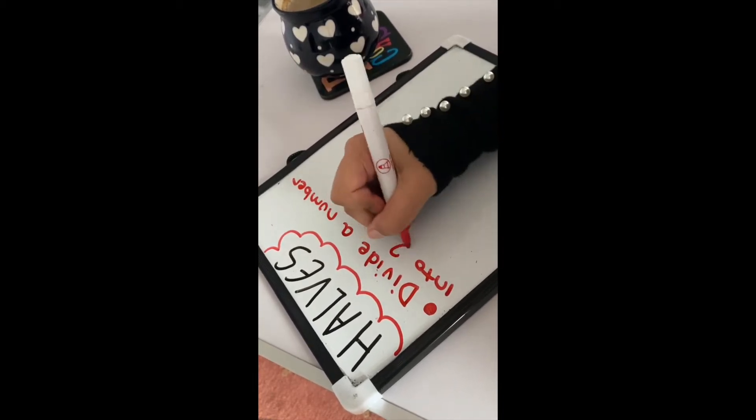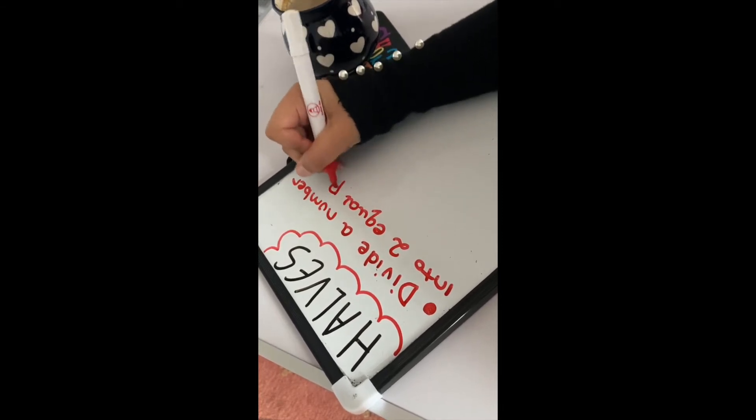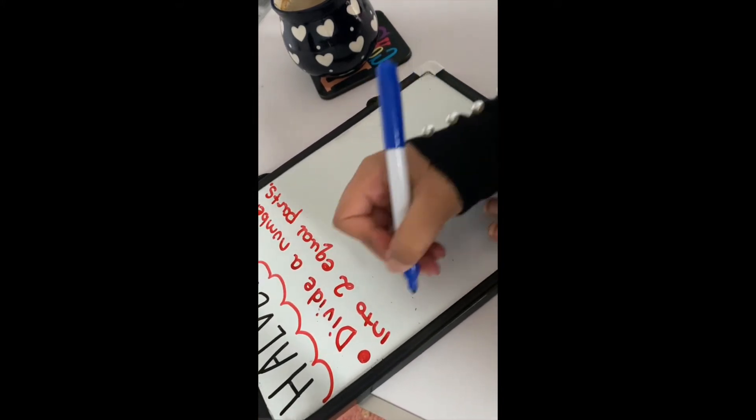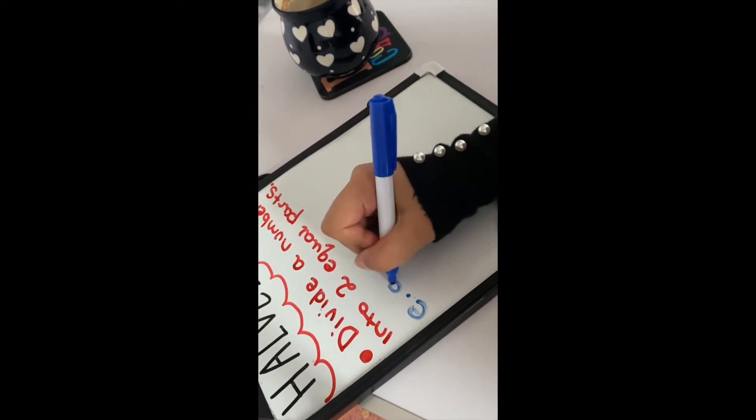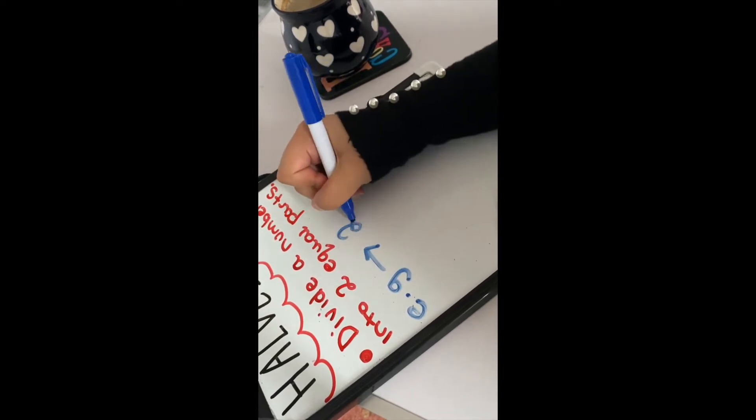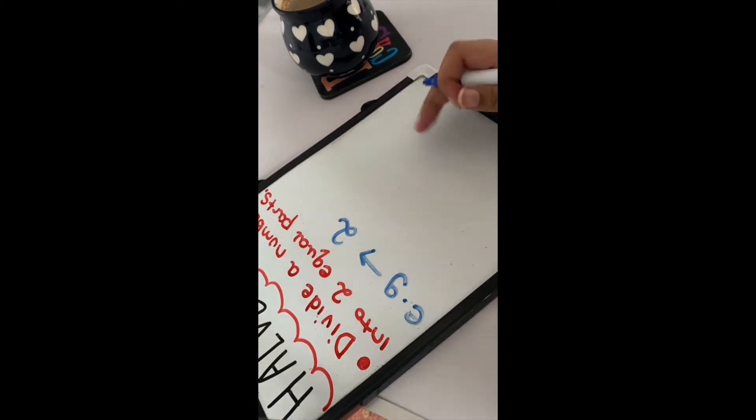Now what do I mean by this? It's always good to give examples. Let's say that we have, let's start off with something easy. Let's say we have the number 2. Now one way in which I encourage children to learn about their halves is to draw two circles: one and two.